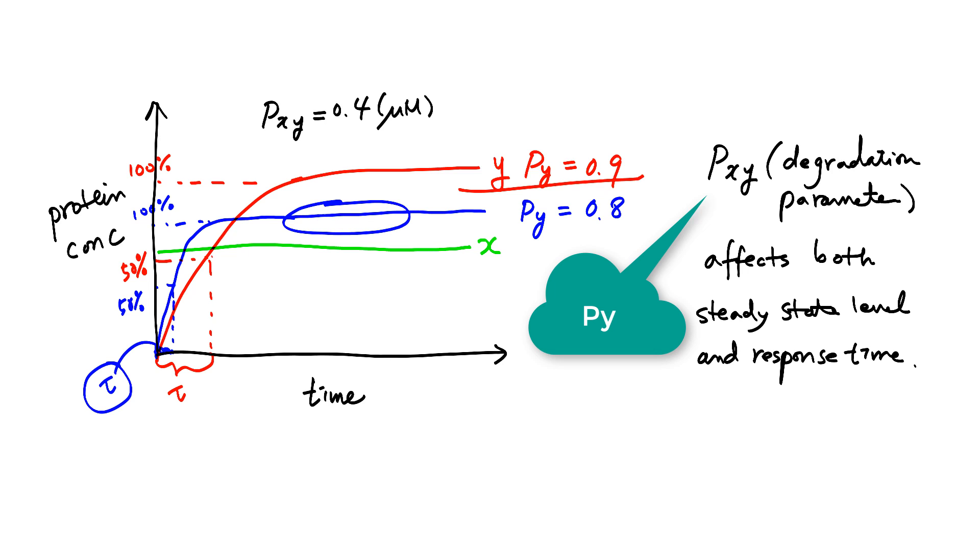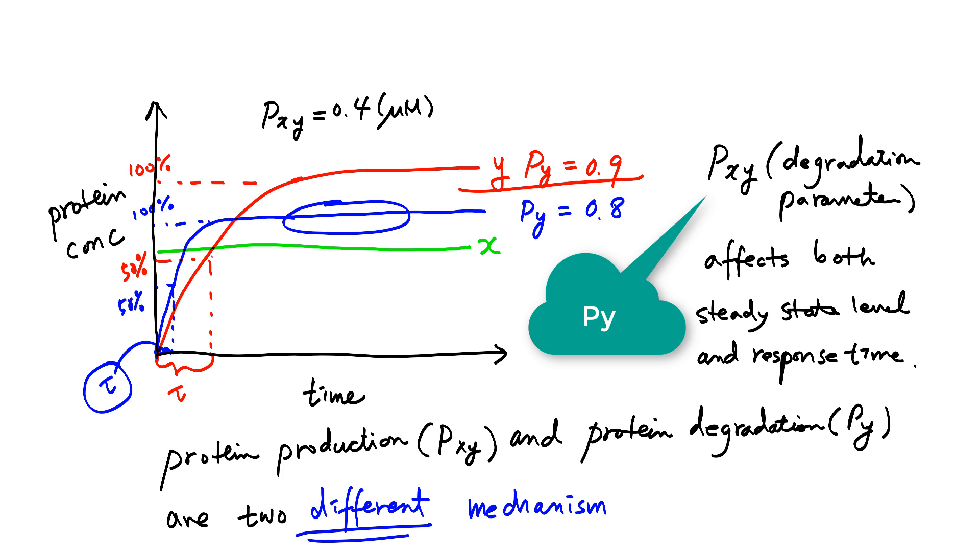So the take-home message is this: Protein production represented by P sub XY and protein degradation represented by P sub Y are two different mechanisms. P XY or the production affects only the steady state level, while P Y, protein degradation, affects both steady state level and response time.